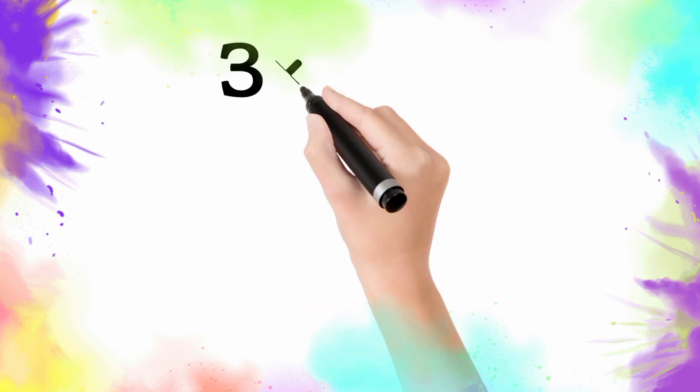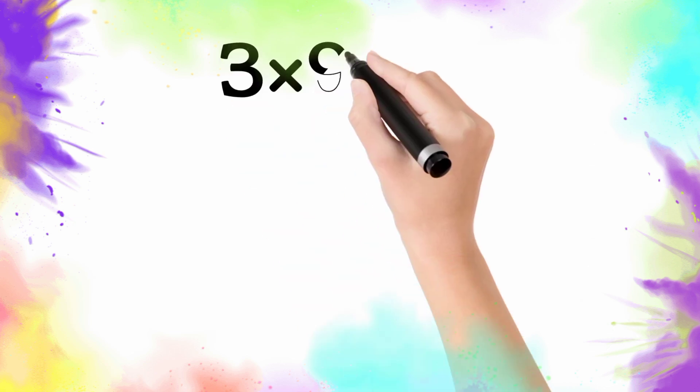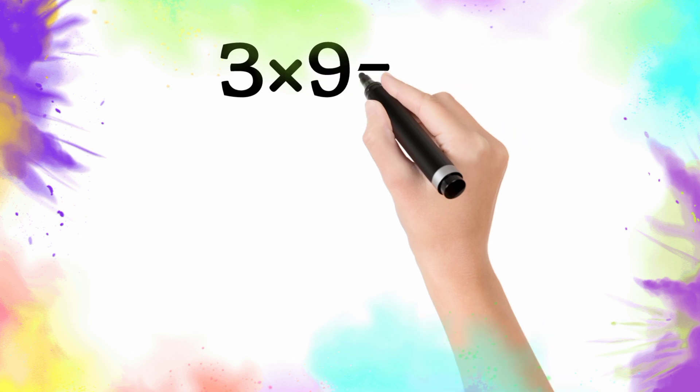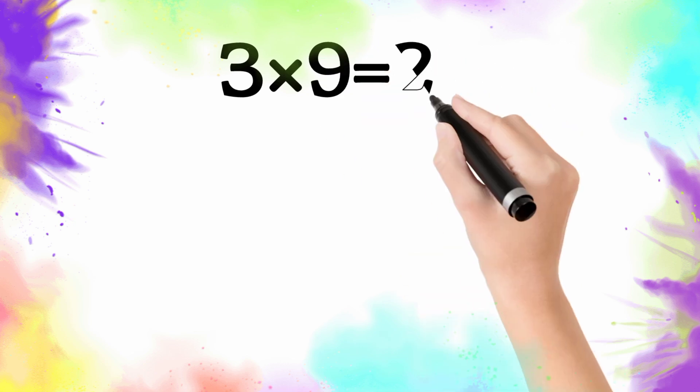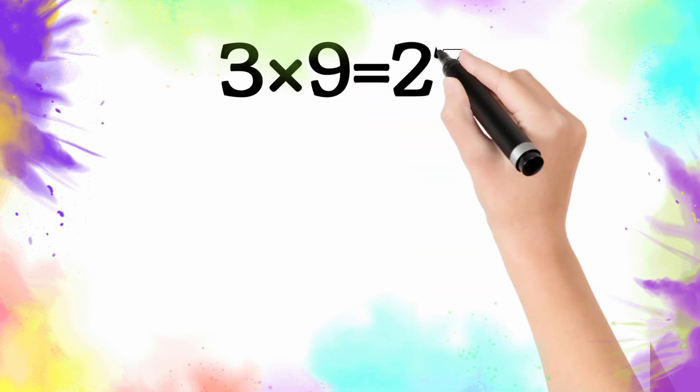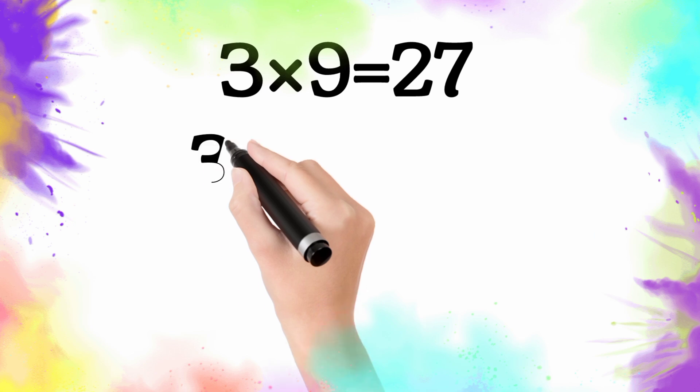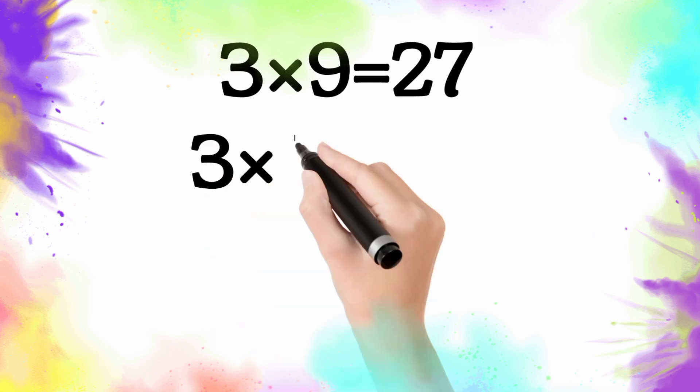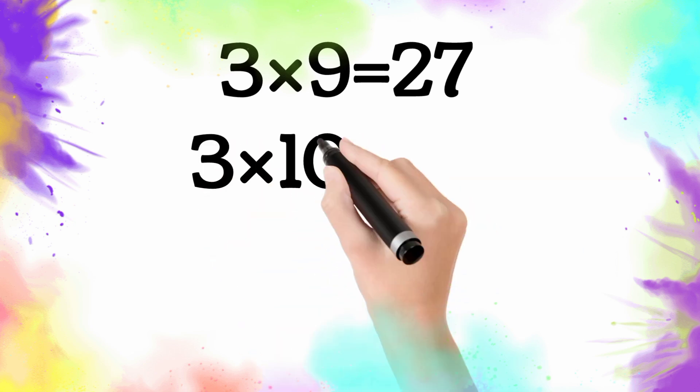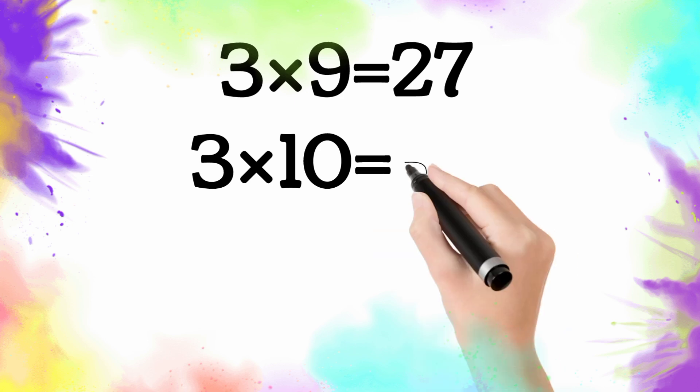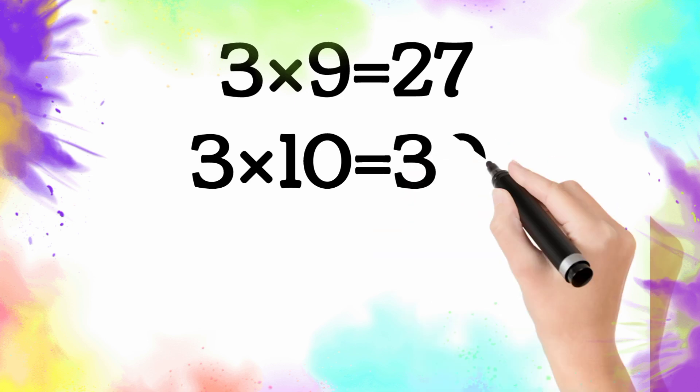Three multiply by nine is equal twenty-seven. So three nine, the twenty-seven. Three multiply by ten is equal thirty. So three ten, the thirty.